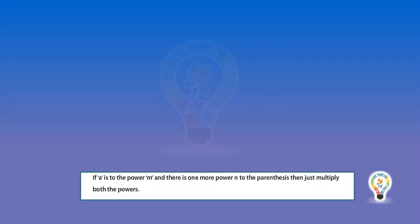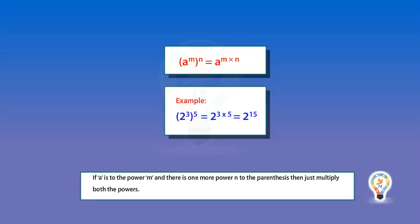The third law is the power to power law. If a is to the power m and there is one more power n to the parenthesis, then just multiply both the powers.